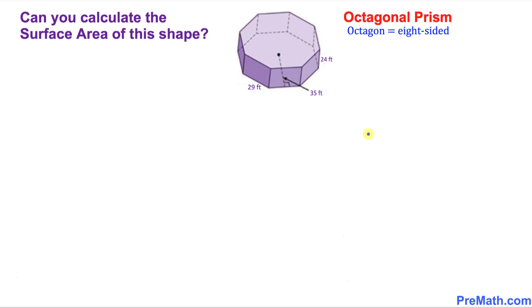Welcome to PreMath. Can you calculate the surface area of this given shape? By the way, this shape is called an octagonal prism. And one more thing, octagon means eight-sided shape.